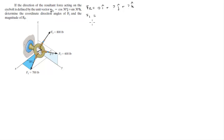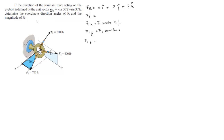Let's start with F1. F1 has an x component, a y component, and a z component. The x component of F1 is F1 cosine of 30, and the y component is F1 sine of 30. Plugging in the numbers, you get 606.2 and 350. The z component is 0 because F1 is sitting on the x-y plane. So F1 equals 606.2i + 350j + 0k.